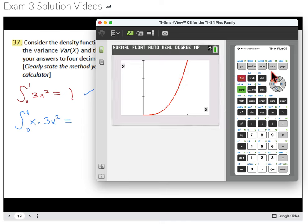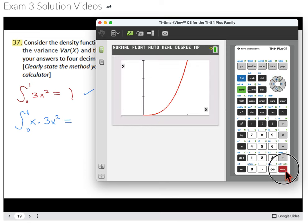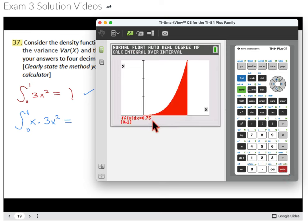But do the same thing. We're going to go second calc. We're going to get the integral. We're going to take the integral from 0 all the way to 1. And this is our average value. This is our mean, 0.75, expected value.